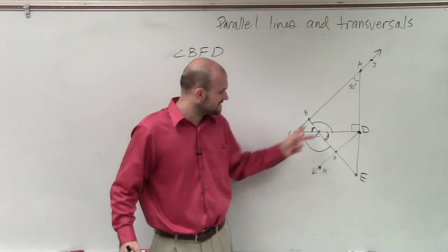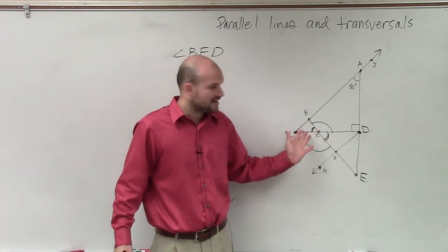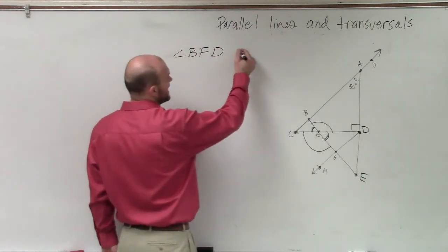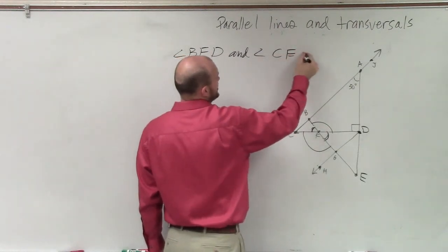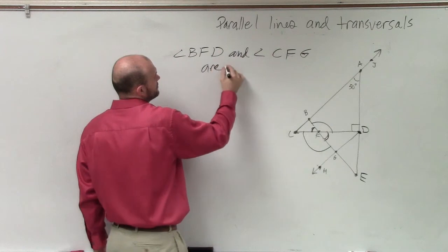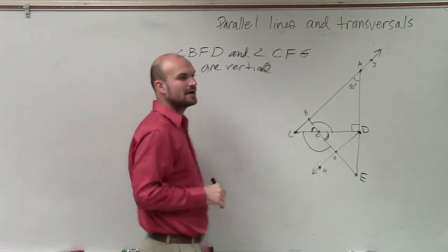Do you see BFD and CFG? Those are across from each other. They have the same vertex, and they do not share any sides. So you could say angle BFD and angle CFG are vertical. And not even so much the vertical, but they're obtuse as well.